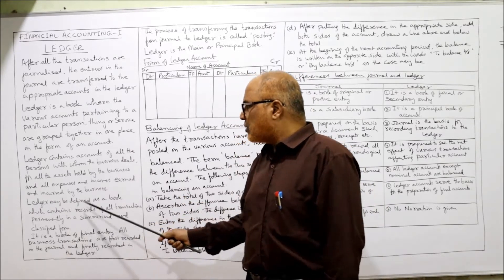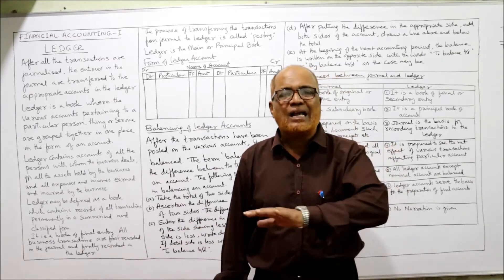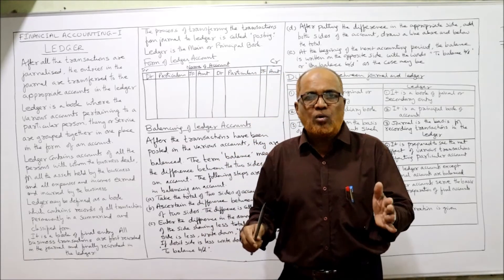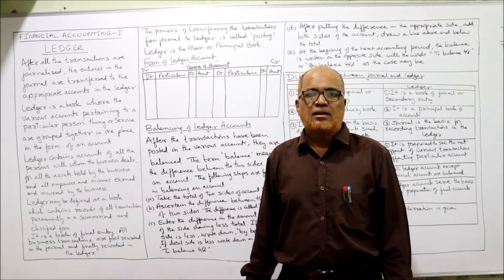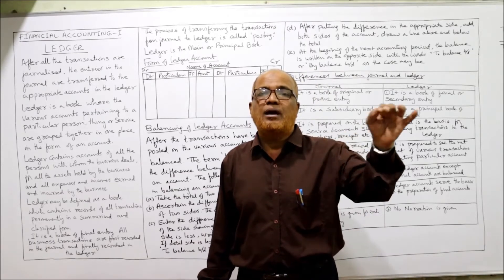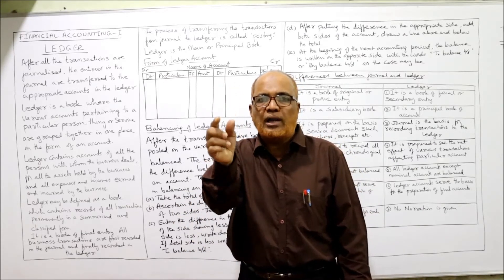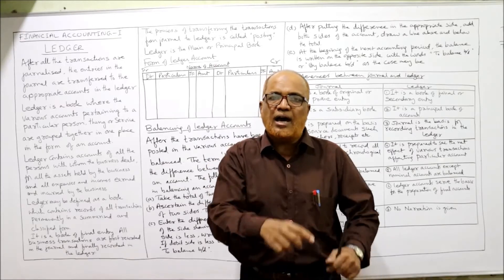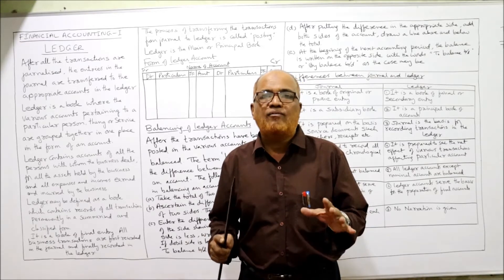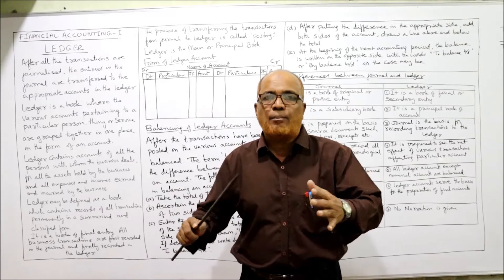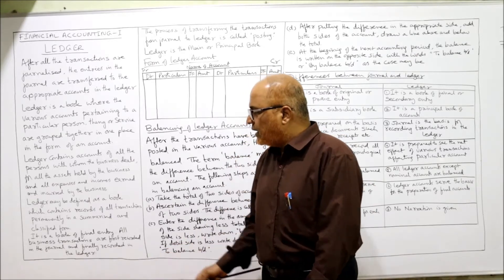So the ledger will contain all accounts of persons, all accounts of assets, and all accounts of expenses and incomes. Ledger may be defined as a book which contains a record of all transactions permanently in a summarized and classified form. It is the main book from which we prepare the trial balance and then the financial statements.